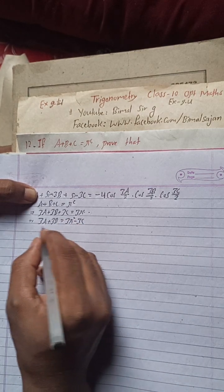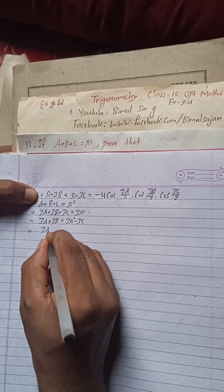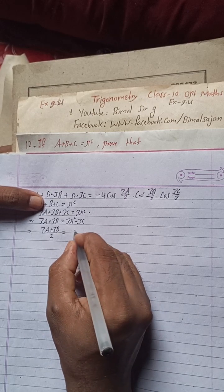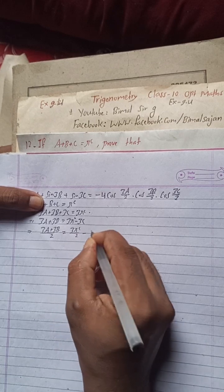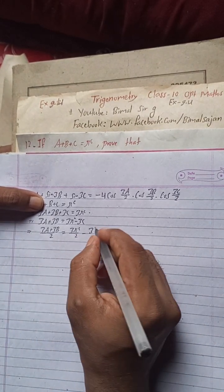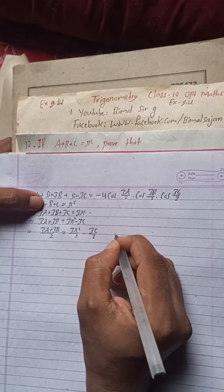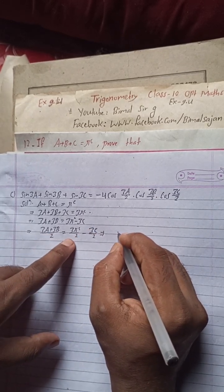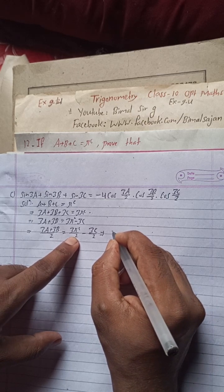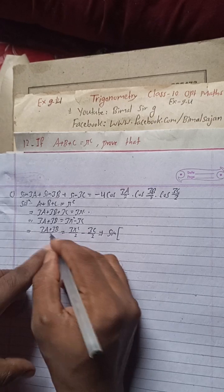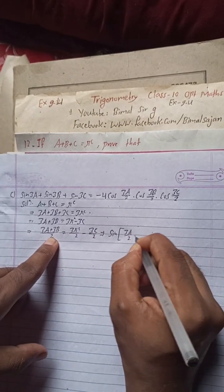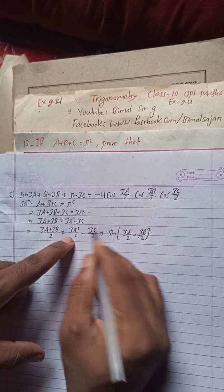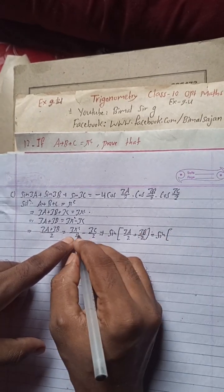Now I will divide both sides by 2, so (3a + 3b)/2 = 3π/2 - 3c/2. Now if I take sine of both sides, the left side becomes sin(3a/2 + 3b/2) and the right side becomes sin(3π/2 - 3c/2).